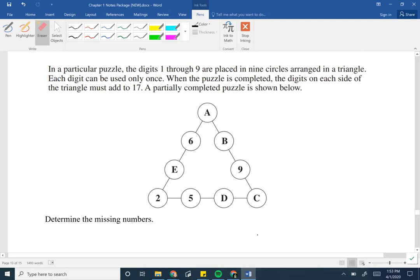In a particular puzzle, the digits one through nine are placed in nine circles arranged in a triangle. Each digit can be used only once. When the puzzle is completed, the digits on each side of the triangle must add to 17. A partially completed puzzle is shown below. Determine the missing numbers. Strategy number one, read the question fully. Once you're done, read it again. What I tend to do is I highlight information that I deem to be important. So I'm going to go ahead and underline what I think would be important.